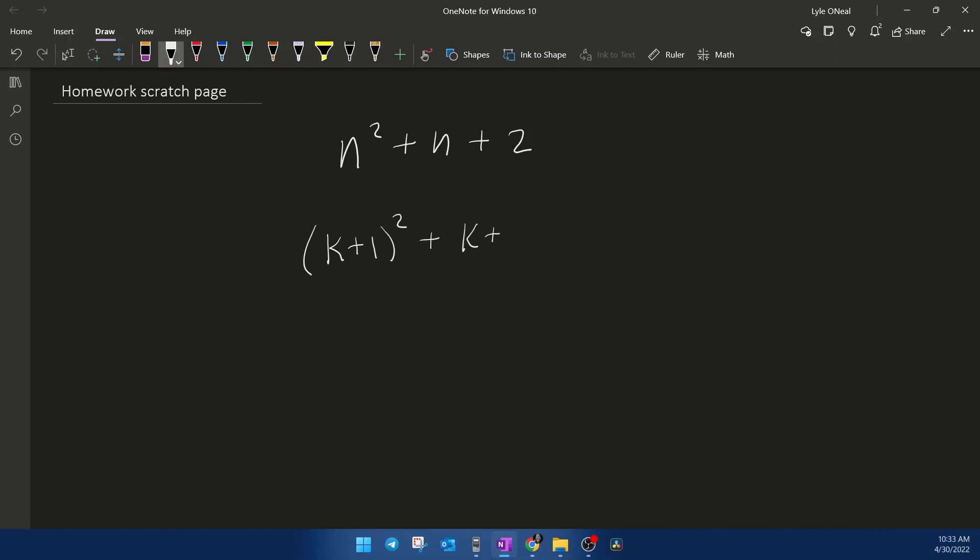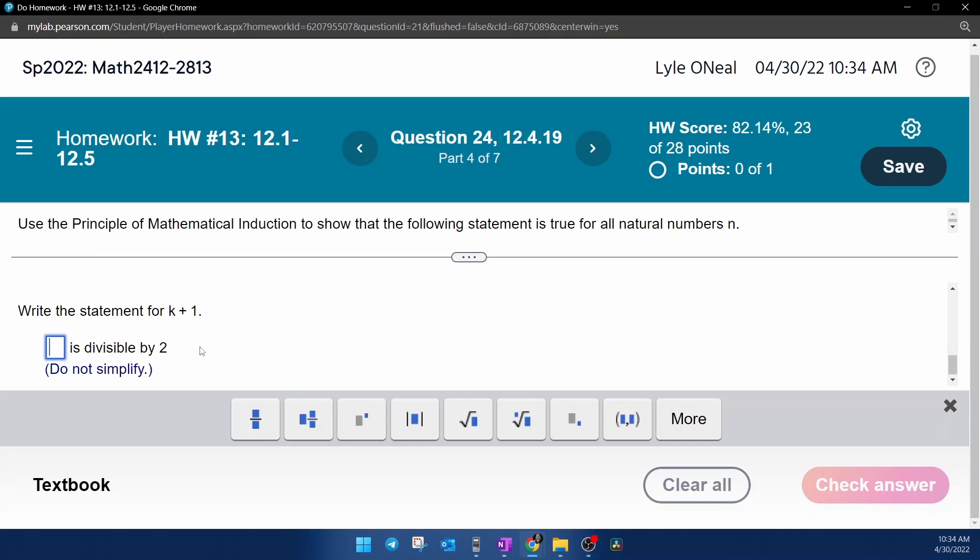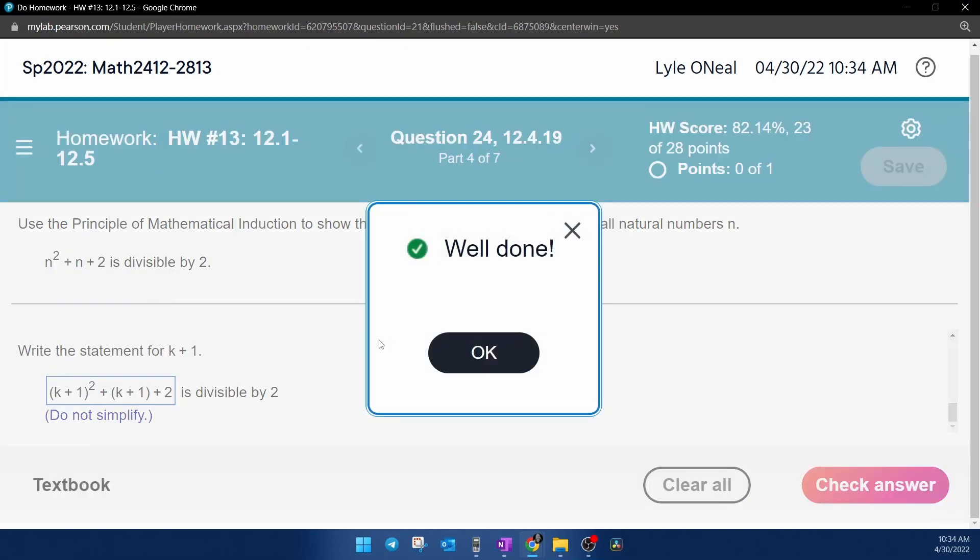And what we're going to have to do is a little bit of simplification. But going back to the MyLabMath and looking at what they want, it says do not simplify. So we're going to input the expression the way that I wrote it in the scratch work without simplifying and see if that's actually what they want. So that was (k plus 1) quantity squared plus k plus 1. I think I'm going to put that in parentheses plus 2. Okay, good. That is what they wanted.